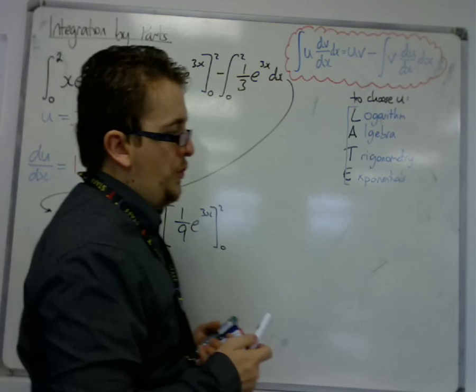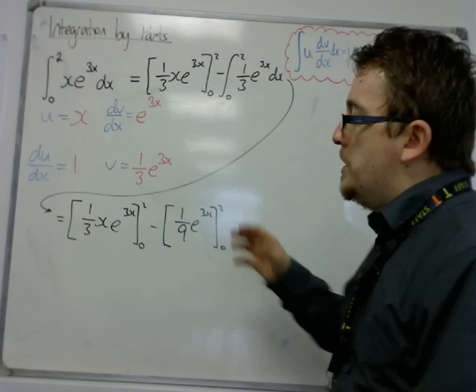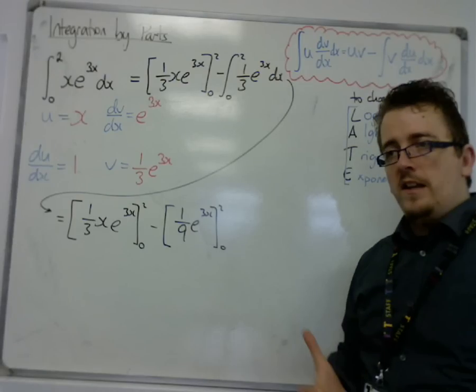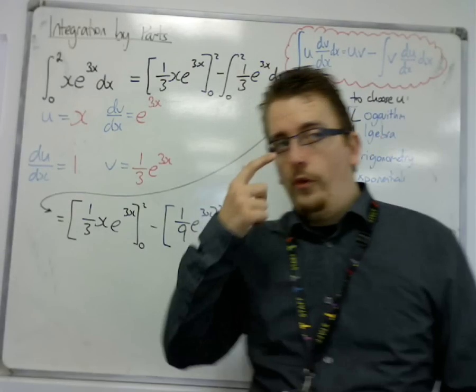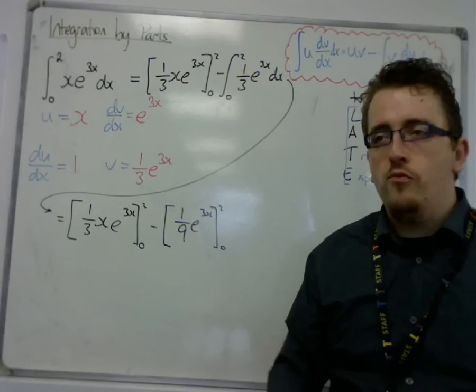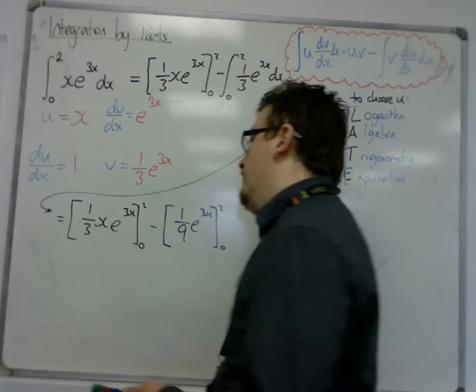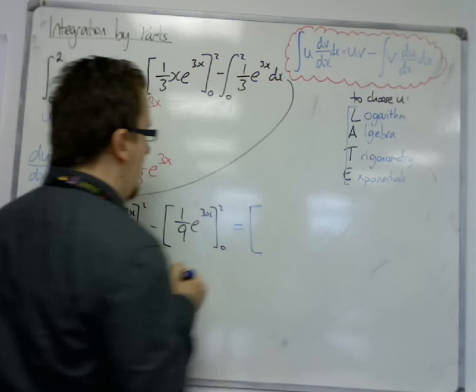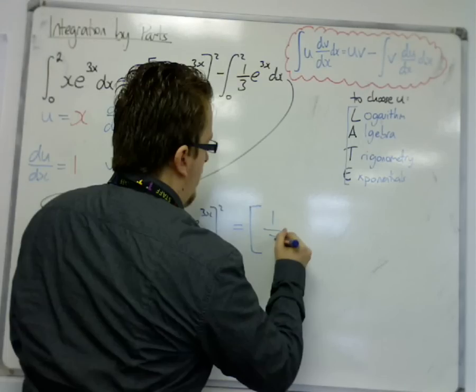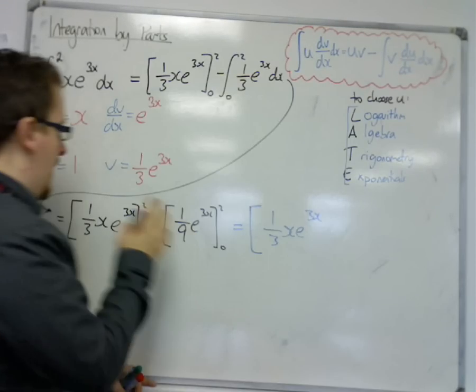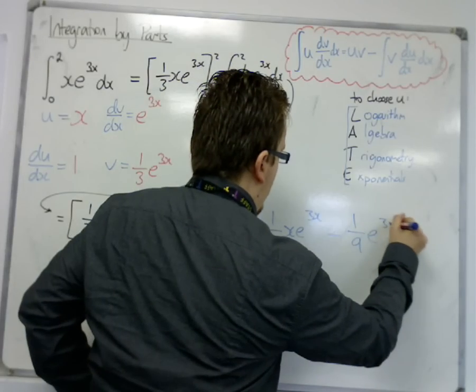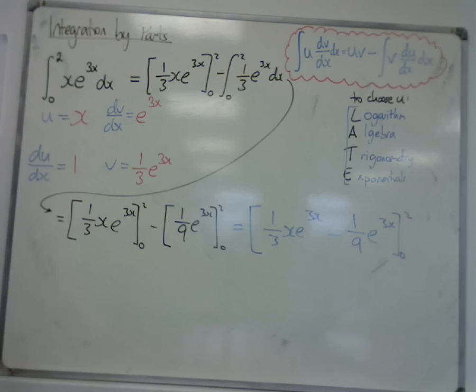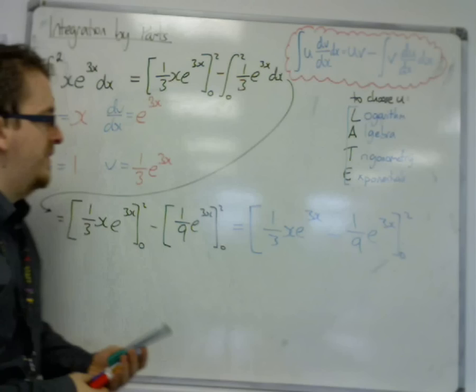Now, in order to make things easier for ourselves, you can now, at this stage, evaluate both square brackets independently and then combine them. That might cause a few issues with minus signs and the amount of brackets you've got to deal with. So, you might want to, at this point, combine the two square brackets. You are perfectly legal to be able to do this. So, 1 third x e to the 3x, take away 1 ninth e to the 3x, evaluated between 0 and 2. That is a legal move you're allowed to make and may well help you and make this easier.